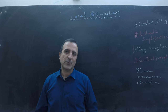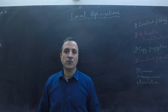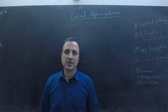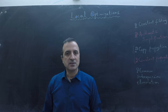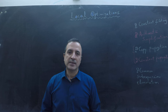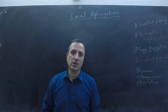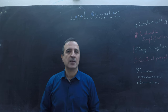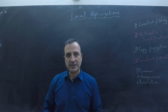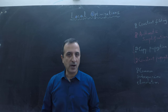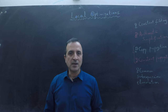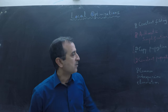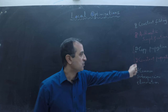Welcome to another video. In this video we will learn about five different kinds of local optimizations. Local optimizations refers to the optimizations that are confined within the basic block of a three address code or of an intermediate representation. In the last video we have learned how to create basic blocks and control flow graph of an intermediate representation. Please check out the last video before continuing this video.